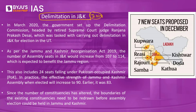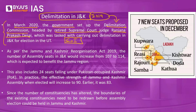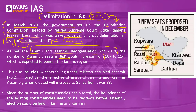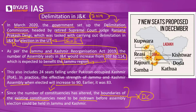Post-2019, considering the revocation of special status and the reorganization of J&K into two union territories, a new delimitation exercise became necessary. In March 2020, the government of India set up a delimitation commission specifically for Jammu and Kashmir, headed by retired Supreme Court judge Ranjana Prakash Desai. Under the J&K Reorganization Act of 2019, assembly seats in J&K were increased from 107 to 114, with a specific provision to include more seats for the Jammu region, bringing the effective assembly strength to 90. The commission was tasked with redrawing the boundaries of existing constituencies.